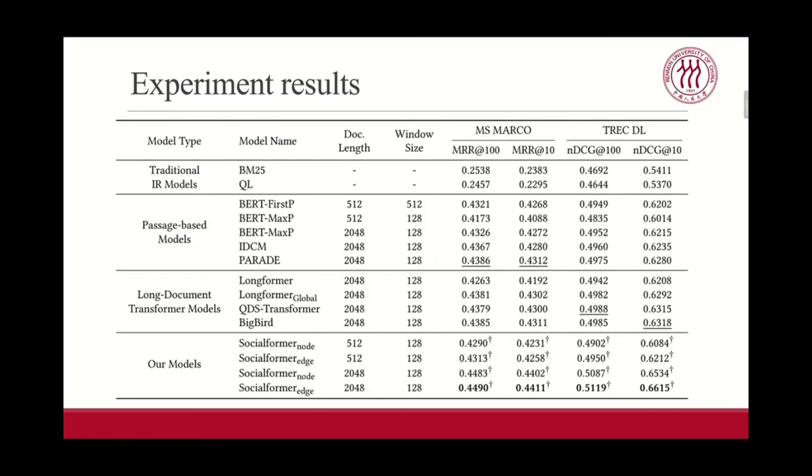This is the overall results. Among all models, our social-aware models outperform all baselines with the same settings in terms of all evaluation metrics. Compared with the best baseline models, our models have significant improvement in both datasets. Comparing different model types, we find that the information transmission among passages is effective in learning global document representations. And comparing different versions of social-former, it can be observed that longer document input brings an obvious improvement in results. And the performance of social-former node and social-former edge are similar for longer document length. But when we limited the input length to 500, social-former edge demonstrates greater superiority. In summary, the experimental results show that introducing social networks into designing sparse attention patterns is conducive to refinement of document representations in long document modeling.